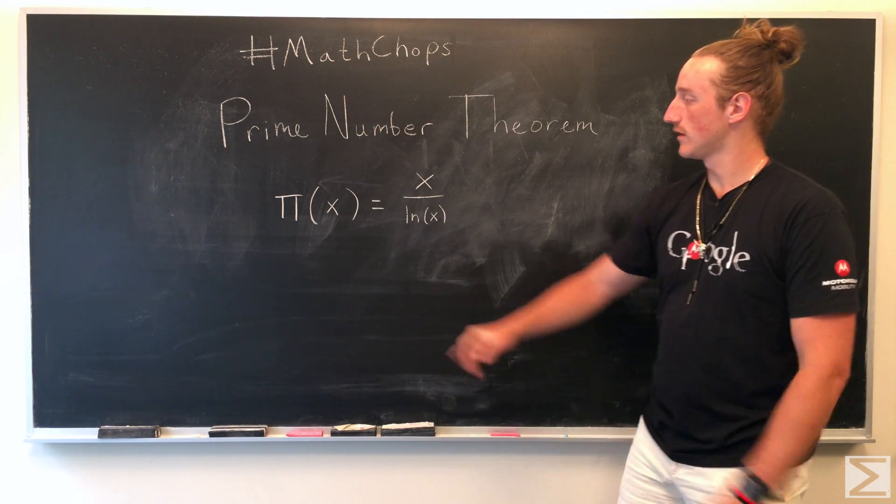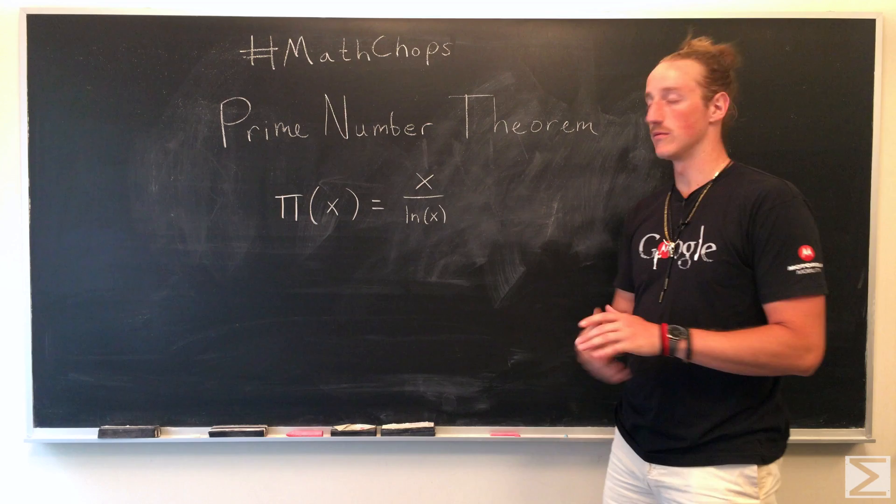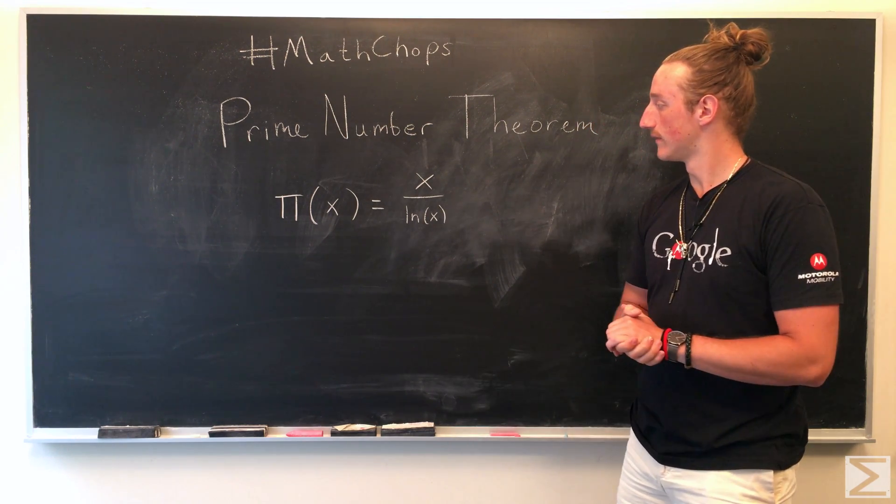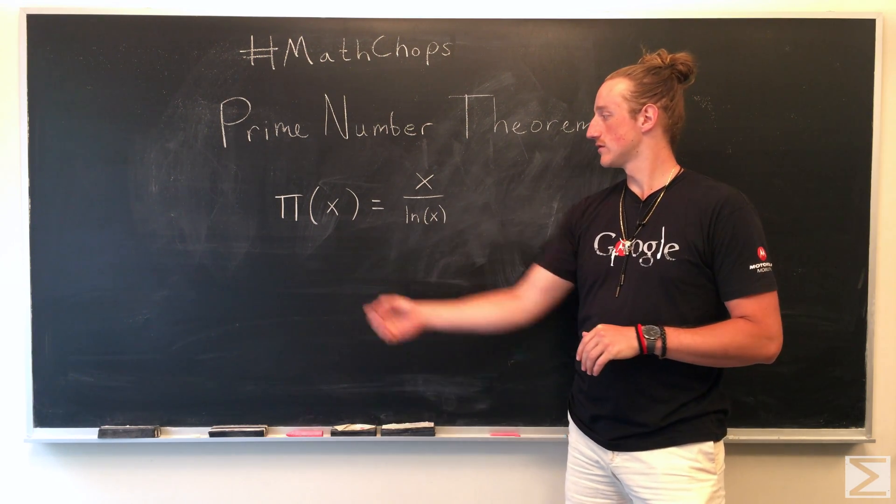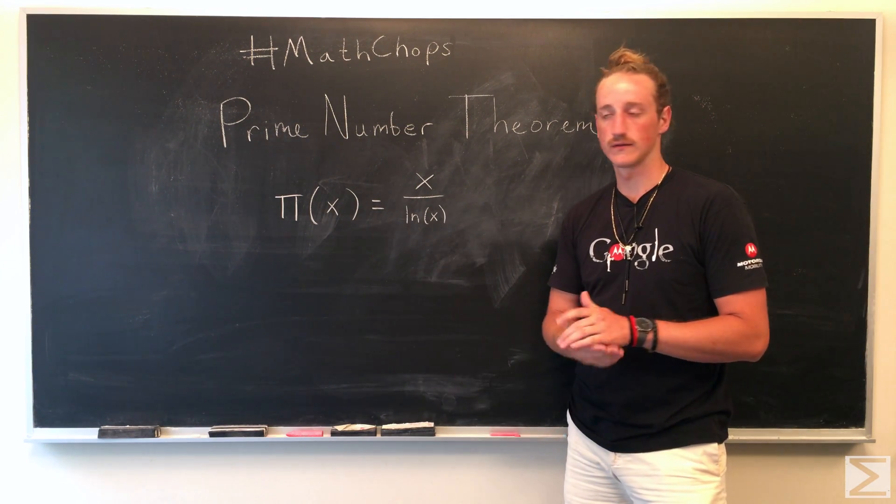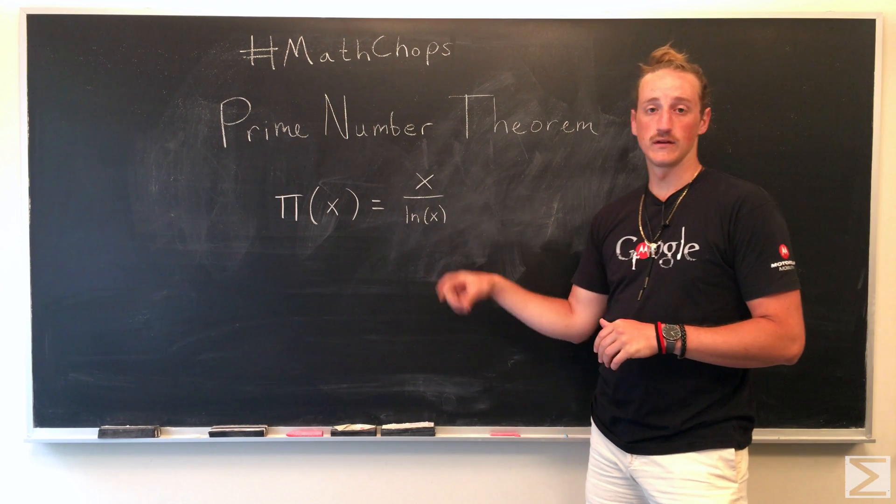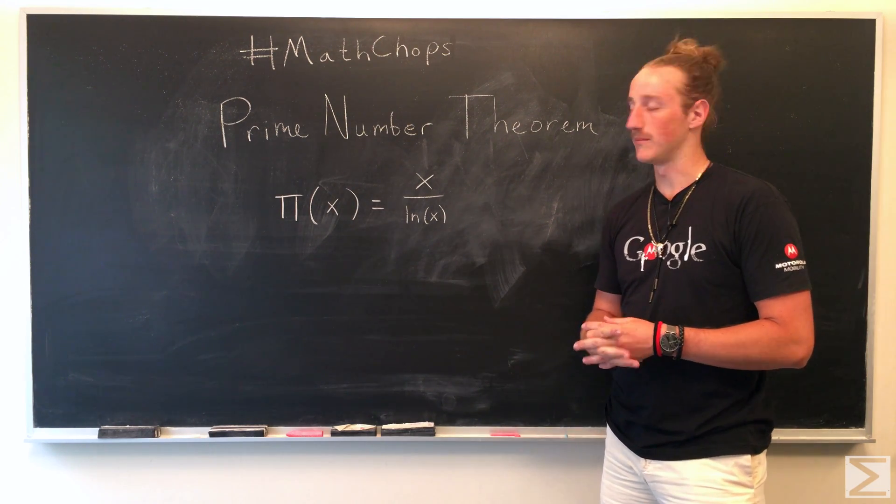So the formula is, as you say, π(x), but it has nothing to do with 3.14. It's just notation, and it's the number x all over the natural log of x. And this formula gives us the approximation of the primes less than x.